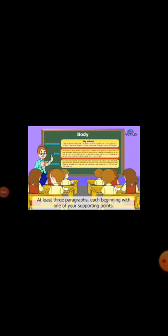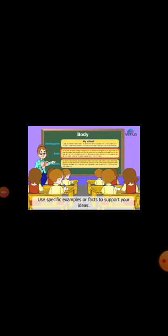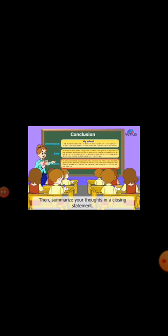Body: at least three paragraphs, each beginning with one of your supporting points. These support the ideas you laid out in your topic sentence. Use specific examples or facts to support your ideas. Conclusion: rewrite your topic sentence in a new and interesting way, then summarize your thoughts in a closing statement.